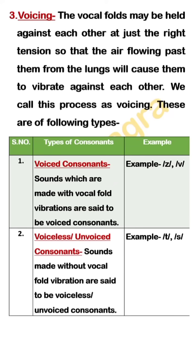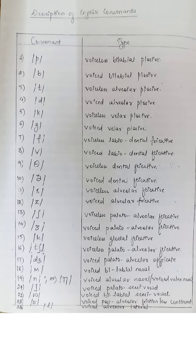Consonants can also be classified on the basis of voicing, which classifies them into two categories: voiced consonants and unvoiced consonants.